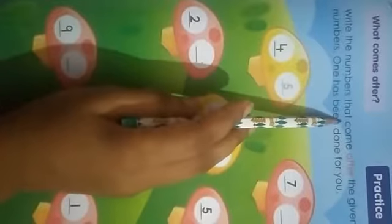Good morning students, this is your maths class. Today we'll do what comes after practice work, page number 65. Write the date and classwork. Let's start. Write the numbers that come after the given numbers. One has been done for you.